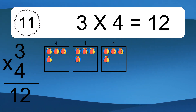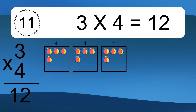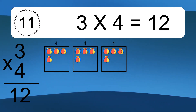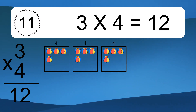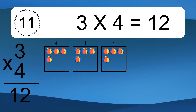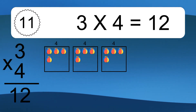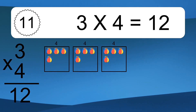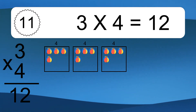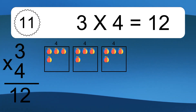3 times 4 equals what? We have 3 boxes, and each box has 4 colorful balls inside. If you count all the balls in all the boxes together, you will have 3 times 4 balls. This equals 12 balls.